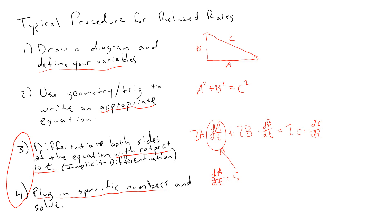One of the most common mistakes in related rates is mixing up steps three and four — trying to plug numbers in first and then differentiate. If you plug in numbers first, you're just differentiating constants and you'll get zeros everywhere. So differentiate first, then plug in specific numbers. Now it's a good time to move on to the next few videos to see examples of how this works.